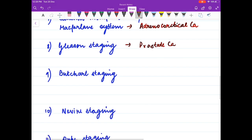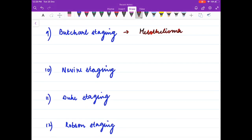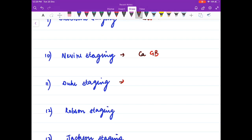Gleason staging is used for prostate carcinoma. Butchard staging is used for mesothelioma. Nevine staging is used for cancer gallbladder. Duke staging is used for colorectal carcinoma.